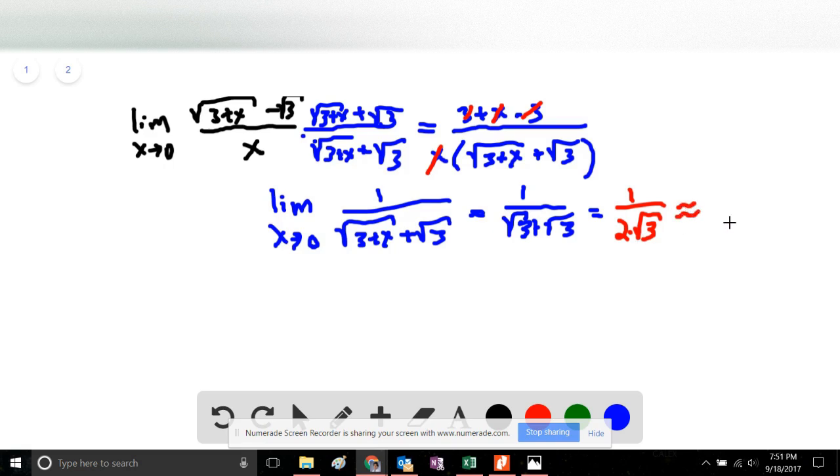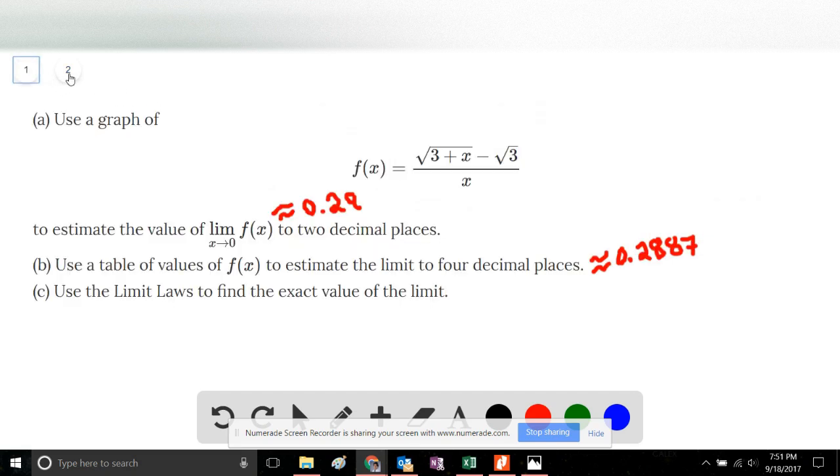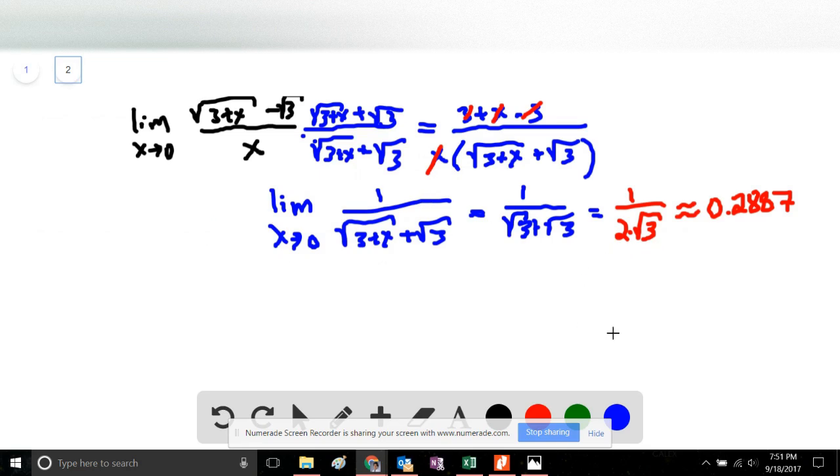This quotient is equal to approximately 0.2887, which is consistent with our estimates from Part A and B.